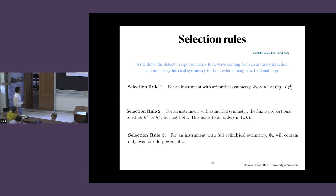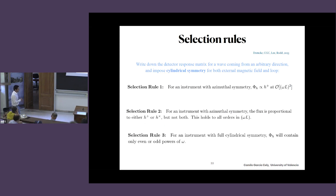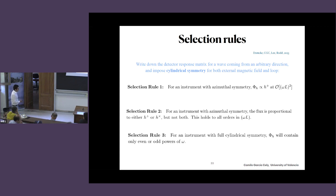These selection rules mean that if you're planning to build an experiment, you can have this set of rules in mind. Obviously, all this suggests that if you want to detect axions and gravitational waves simultaneously, azimuthal or cylindrical symmetry is probably not a good idea.